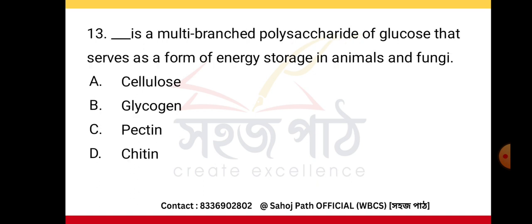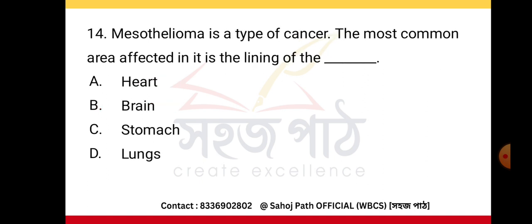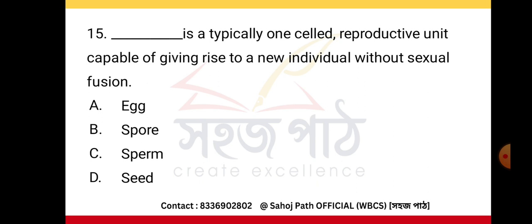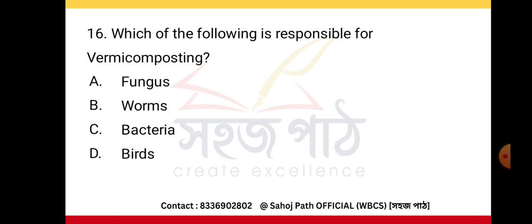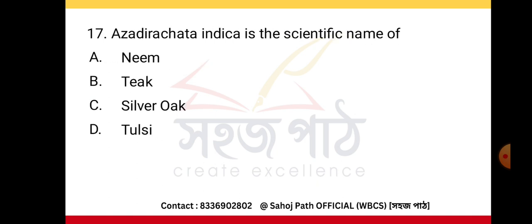Glycogen is a multi-branched polysaccharide of glucose that serves as a form of energy stored in animals and fungi. Mesothelioma is a type of cancer; the most common area affected is the lining of the lungs. A spore is a typical one-celled reproductive unit capable of giving rise to a new individual without sexual fusion. Which of the following is responsible for vermic composting? Worms.